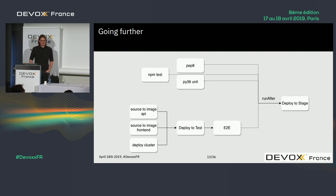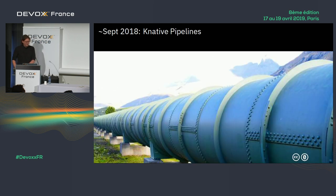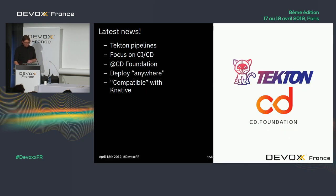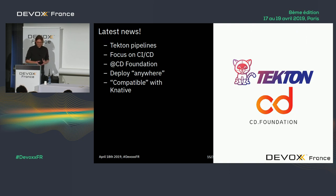But what if you want to go farther — not only build your image, but also run unit tests, linters, deploy to a Kubernetes cluster, and run end-to-end tests? This use case brought about the Knative Pipeline effort, started around September 2018. In March this year, after months of development, the project was separated from the Knative space as an independent effort now called Tekton Pipelines.